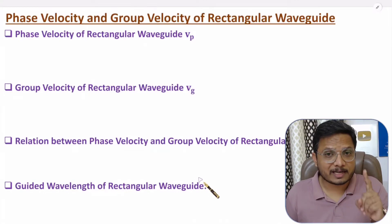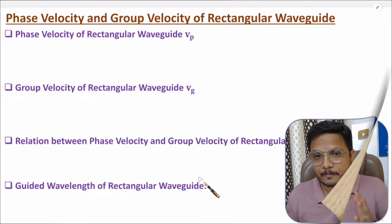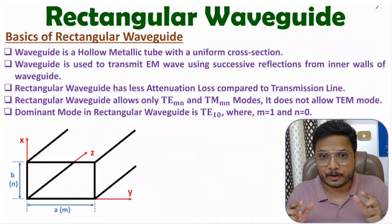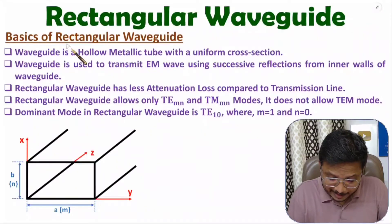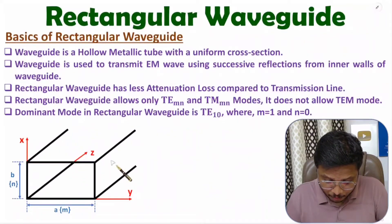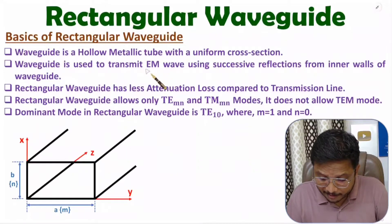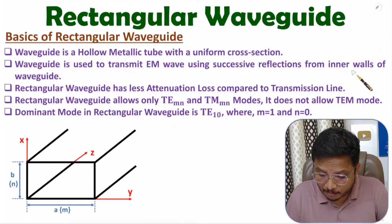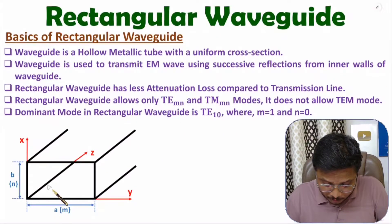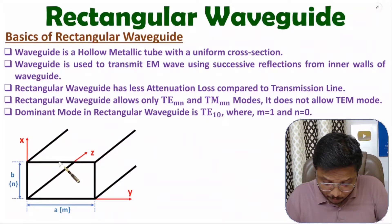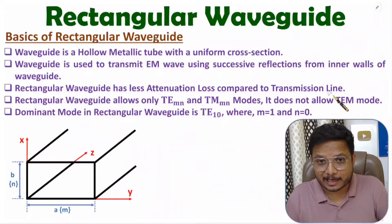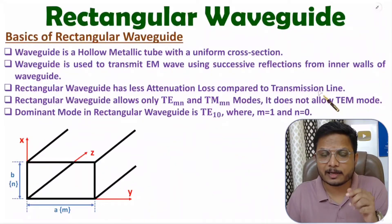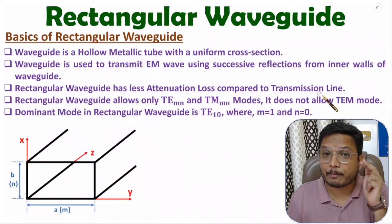Let us begin this session with the first agenda — basics of rectangular waveguide. A waveguide is a hollow metallic tube. With a rectangular waveguide, we have a rectangular hollow metallic tube. In a waveguide, we transmit EM waves using successive reflection from the inner walls — whatever signal we incident is transmitted through the waveguide based on reflection from the walls. Rectangular waveguide has less attenuation loss compared to a transmission line, which is why waveguides are widely used.